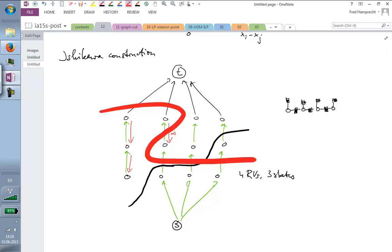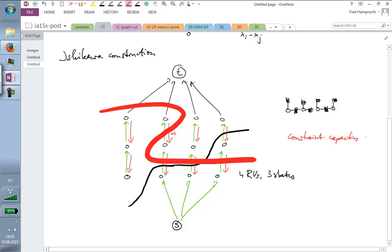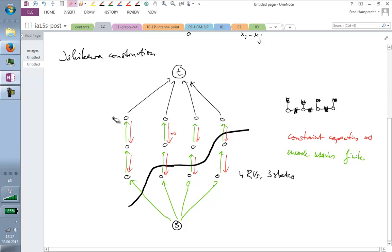And in order to disallow this, I'm going to introduce these constrained edges which have, and I'm going to endow them with an infinite capacity. So, the red ones are constrained capacities which are infinite. And in green we have these capacities which express what unaries I prefer. So, these green ones, they encode the unaries, and they are of course finite. And this construction now disallows cuts like the fat red one that I had indicated here.